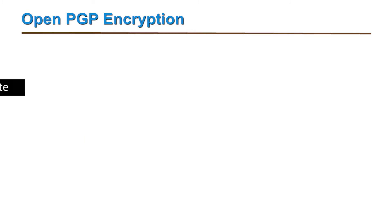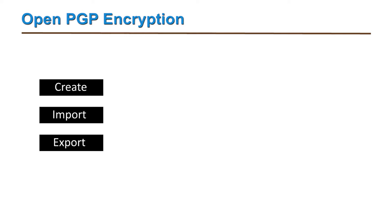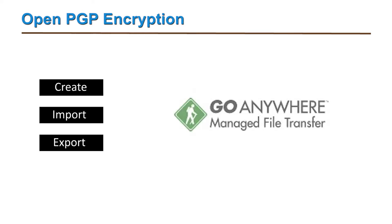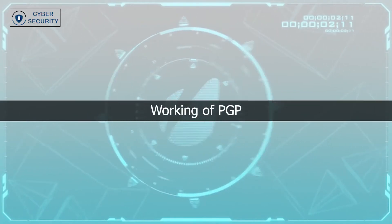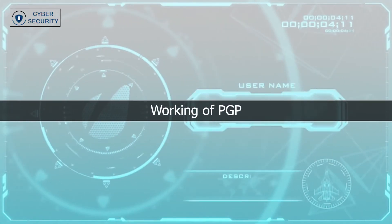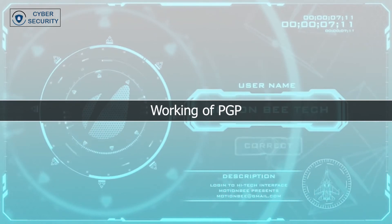A user can create, import, and export PGP keys through a feature called GoAnywhere, which is a key management system. Keys are protected and organized into key vaults for secure access controls. Getting the key pair — that is, a public-private key pair — is easy and just follows the steps below.